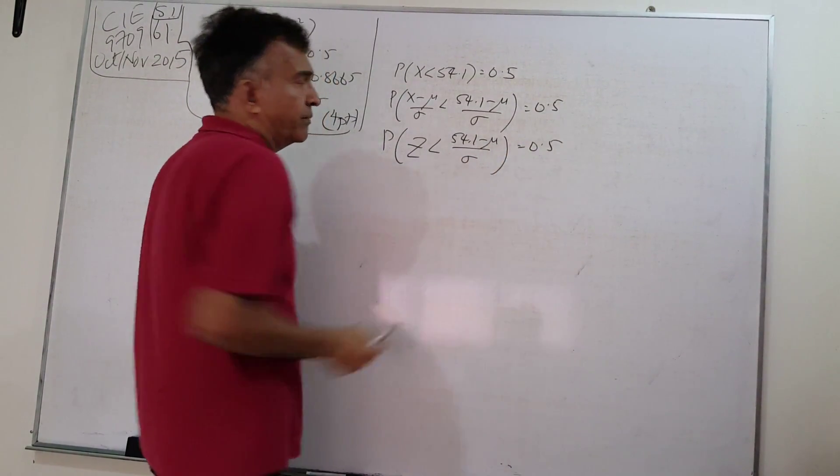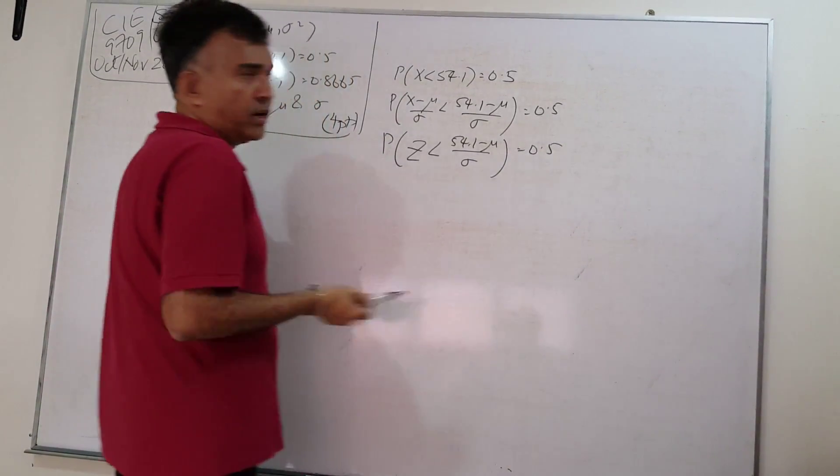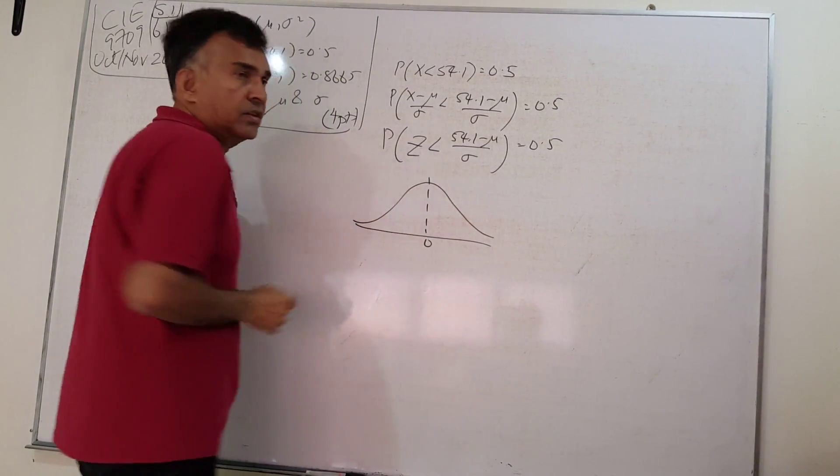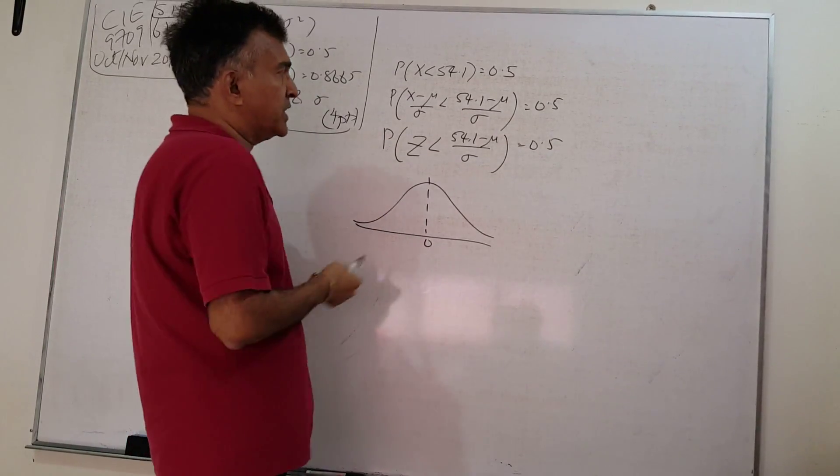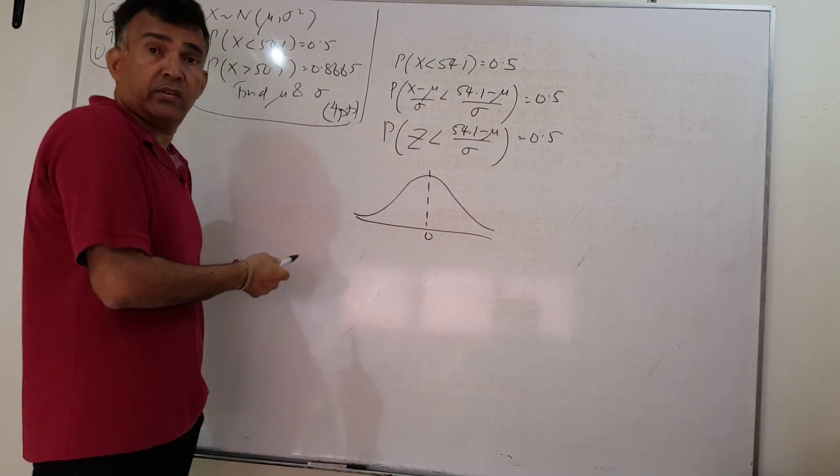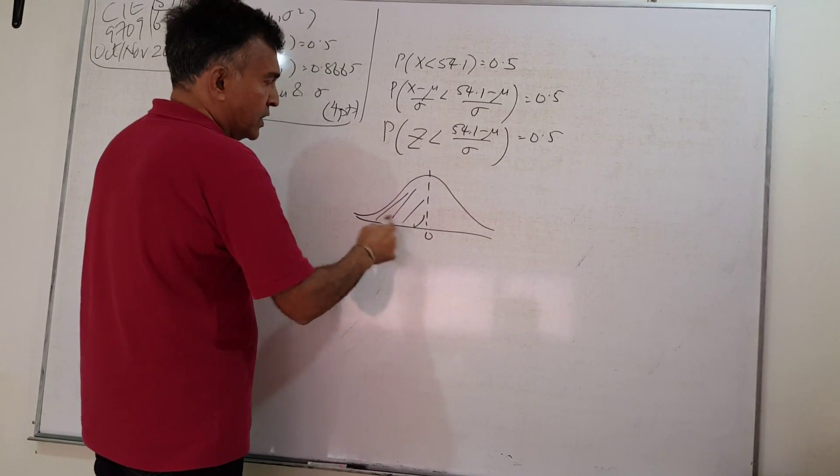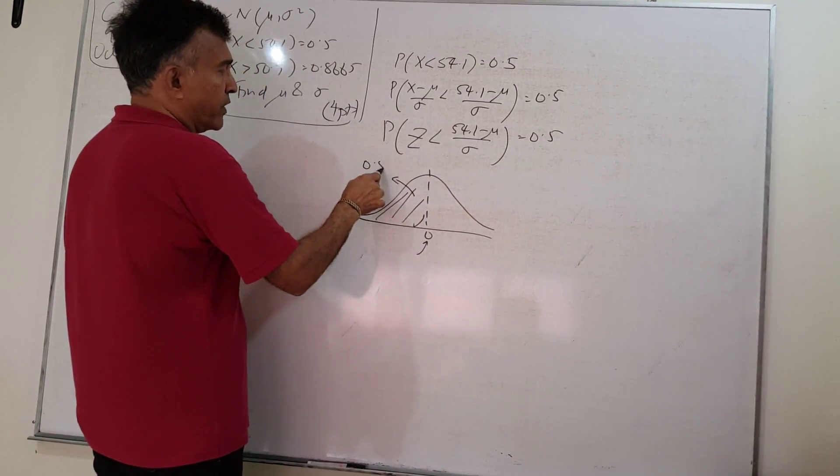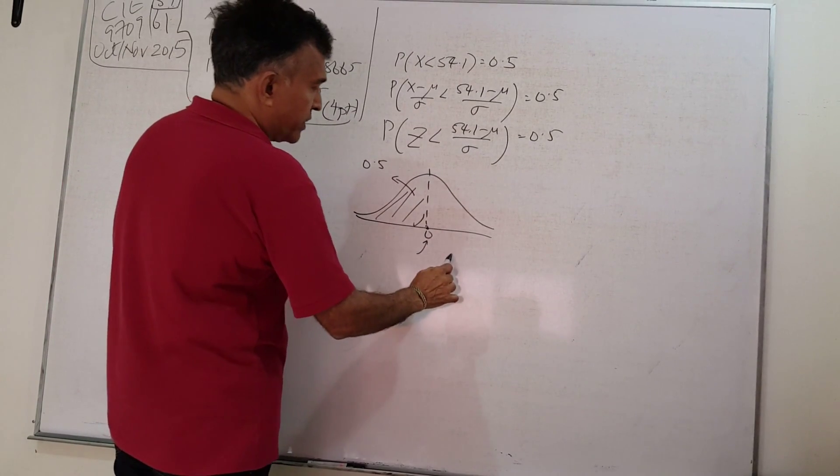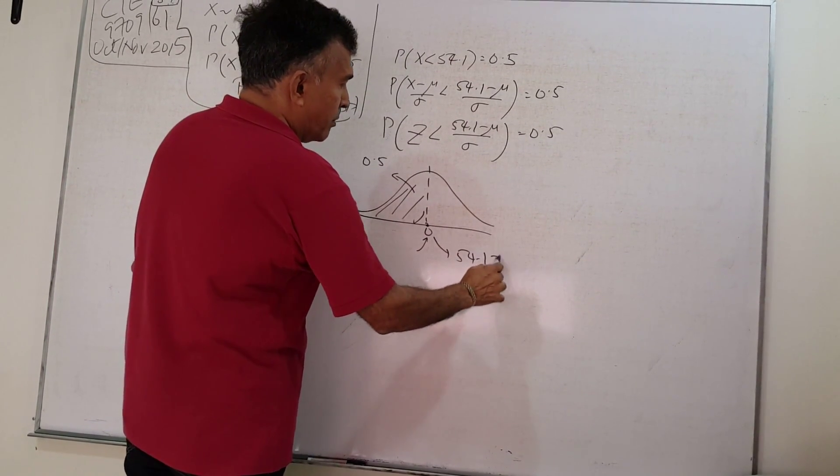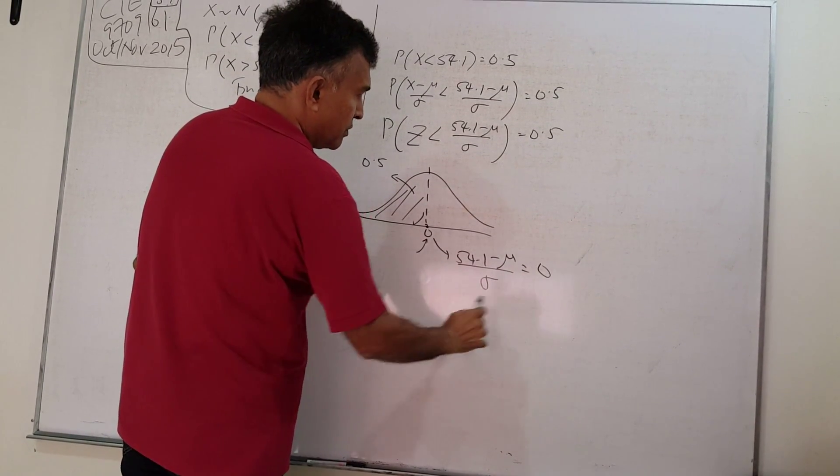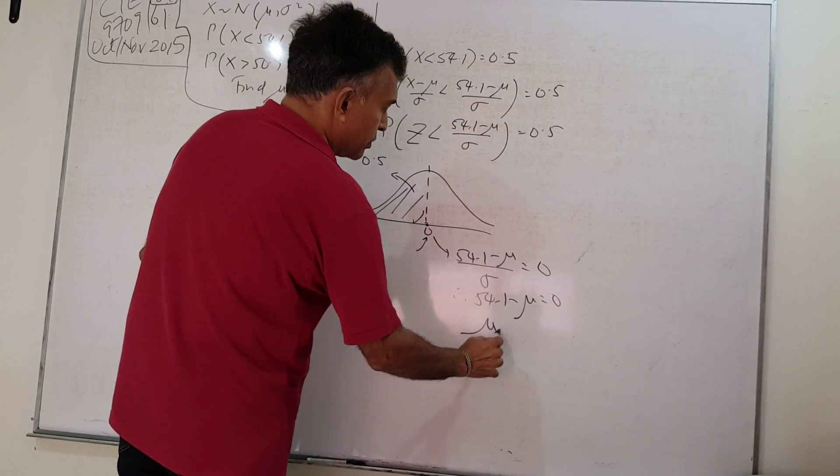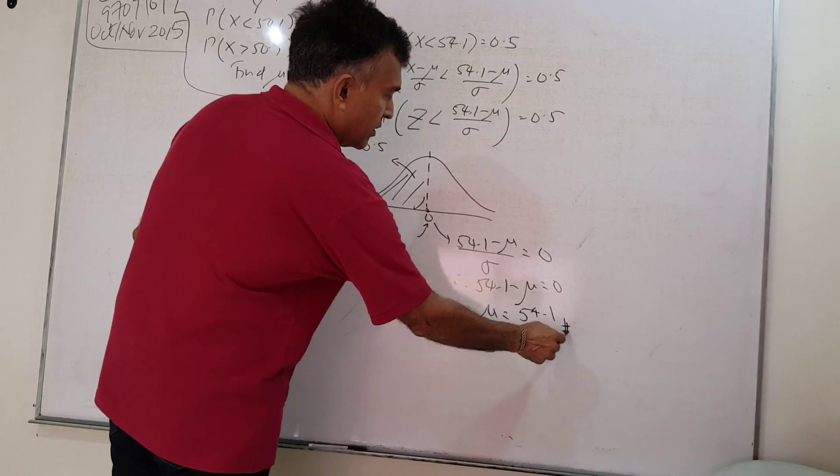Let me draw a picture. This is the distribution of Z, and probability of Z less than something is 0.5. We know this is a symmetric distribution, so this is 0.5, so the value of Z is 0. Let's write down: 54.1 minus μ over σ equals 0, therefore 54.1 minus μ equals 0, μ equals 54.1. Easy.